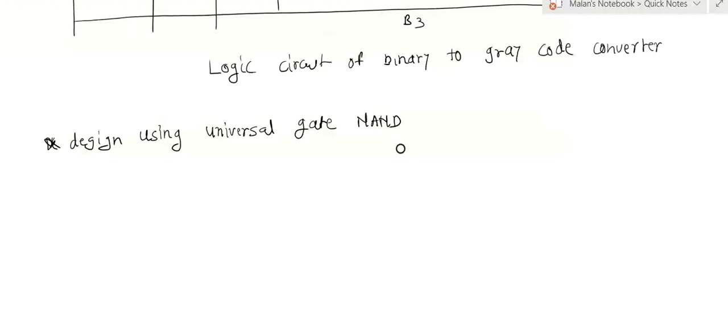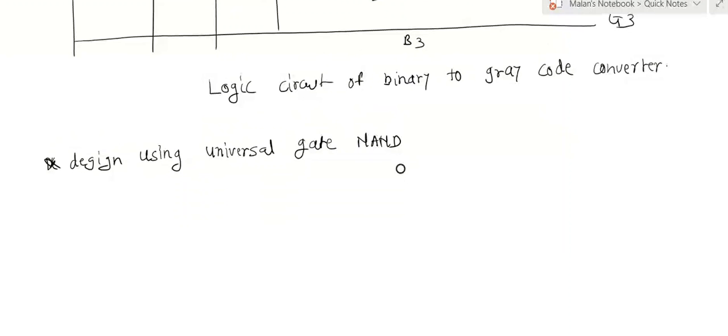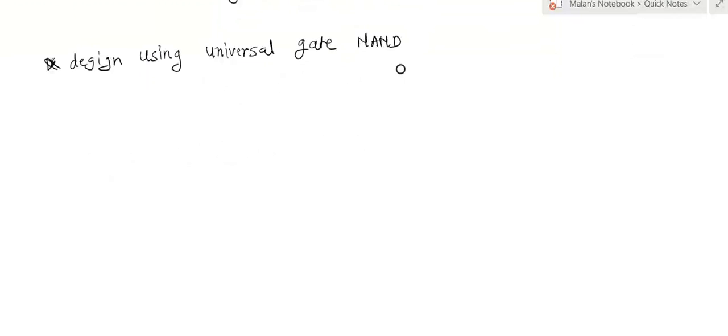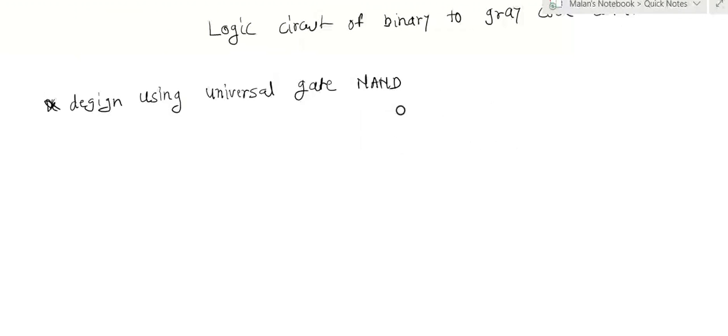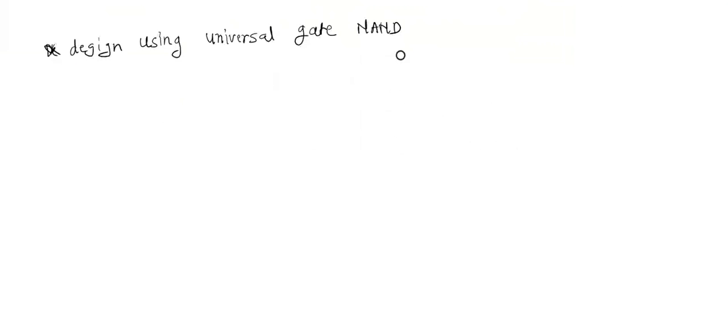Now I want to implement the binary to gray code converter by using the universal gate. This is a logic circuit using the XOR gate, which is a simple logic gate. Now I want to implement the logic circuit by using the universal gate — NAND gate or NOR gate. Now I will try for the NAND gate.